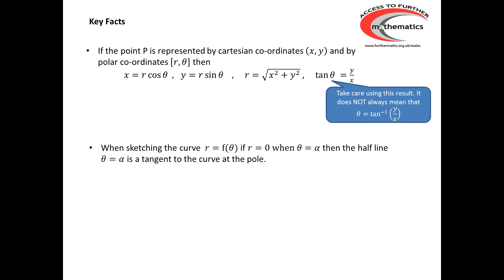We need to be able to sketch polar curves, and there's one important property to realise: if r = 0 when θ = α, then the half line θ = α is a tangent to the curve at the pole.